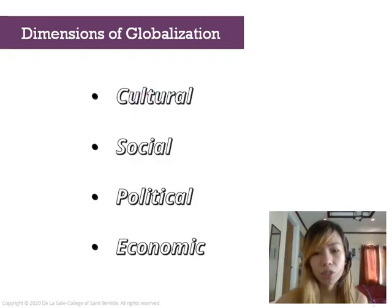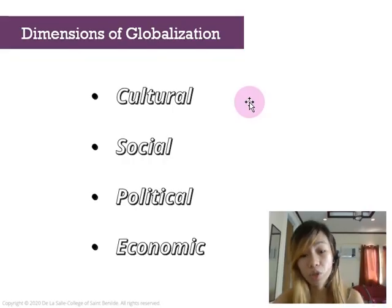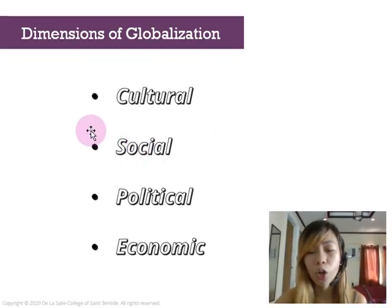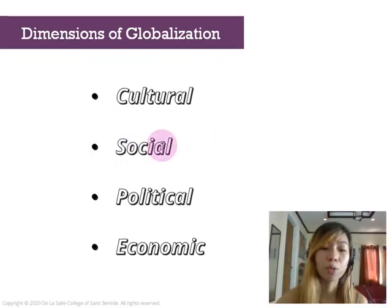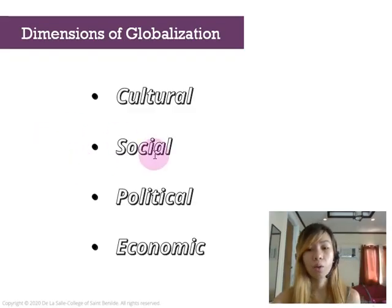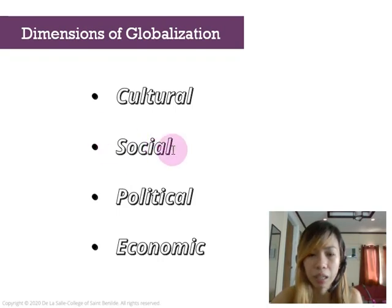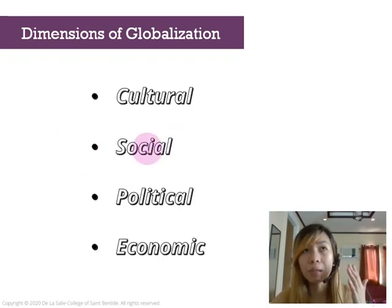Next is the social dimension. This dimension has something to do with global social relations — mobility, tourism, and a sense of global community. Right now, we have the mindset that we're not only living in a country, we're living in an international community, with a sense of being a world citizen rather than just a citizen of your own country.